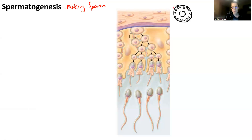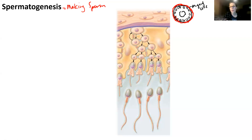Surrounding the tube you have myoid cells, and you also have interstitial endocrine cells, which are also called Leydig cells. The myoid cells essentially constrict and cause the movement of sperm down the seminiferous tubules.